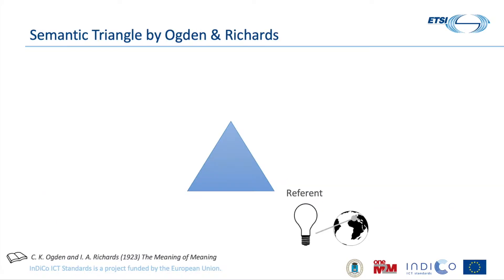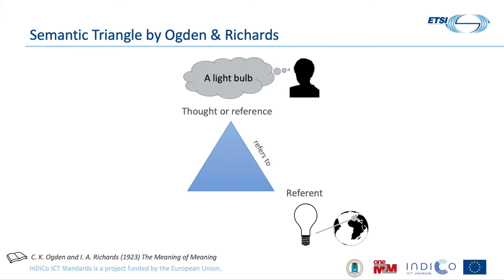One of the classic representations that we find is the semantic triangle by Ogden and Richards. We have some entity in the real world that is called a referent, and an actor that when thinking about this entity has in thought some reference — the person thinks of this entity in some particular way. For example, this person thinks that he or she is seeing a light bulb. But when we have to communicate and talk with others about what we are seeing, what we use is symbols. For example, we could represent what we are seeing with the symbol 'bulb'.